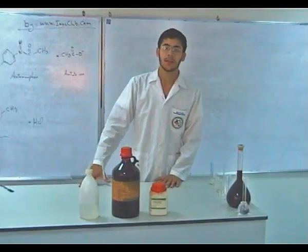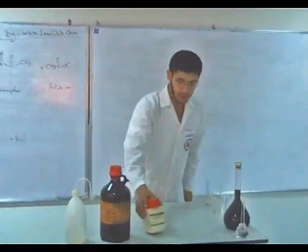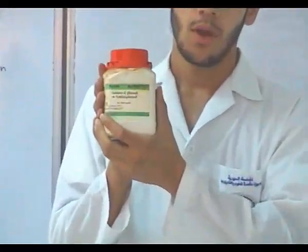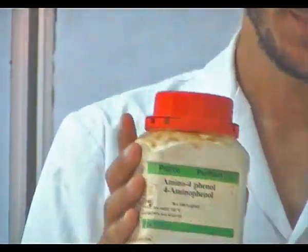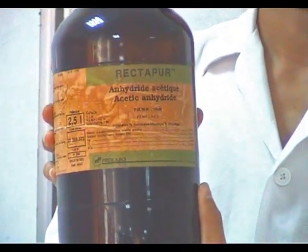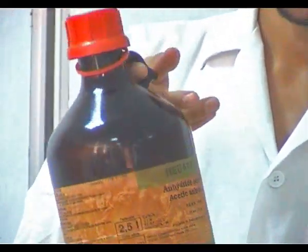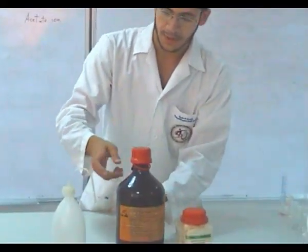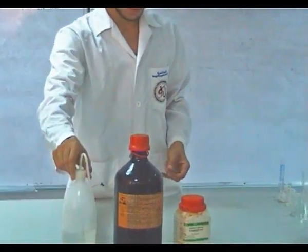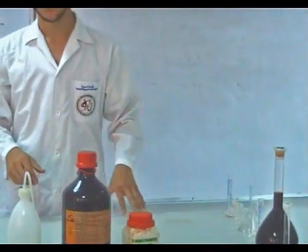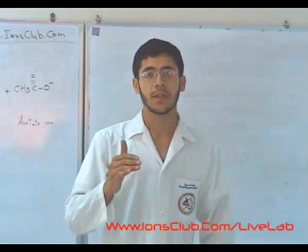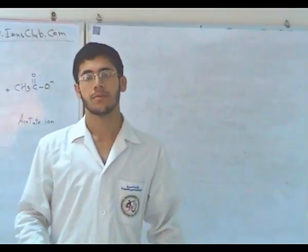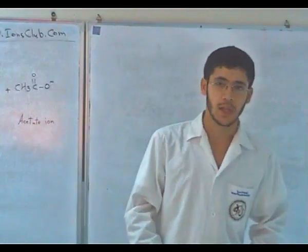Now the practical part of this movie. This is para-aminophenol, or it can also be called 4-aminophenol — they are the same. This is acetic anhydride; it has a brown color and can be distinguished by its smell. This is distilled water. You can read the procedure, weight, and volume of the reagents on the website of this movie at iosuclab.com.